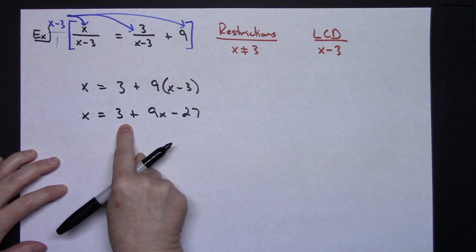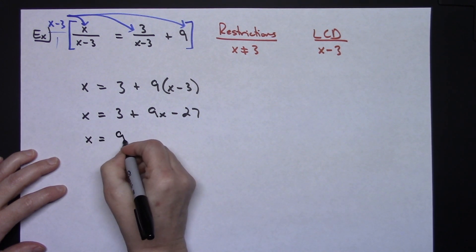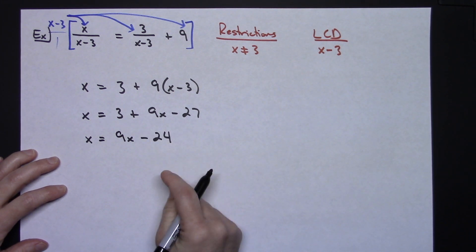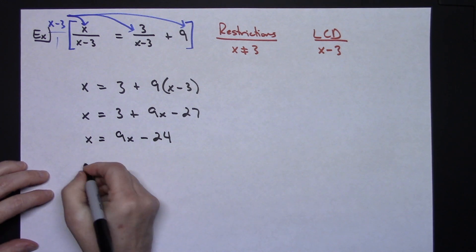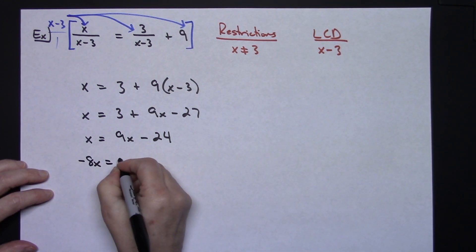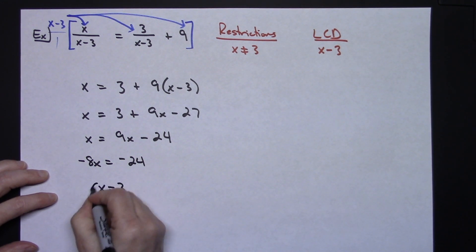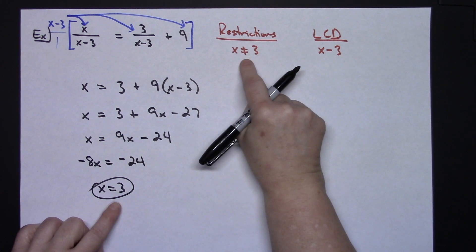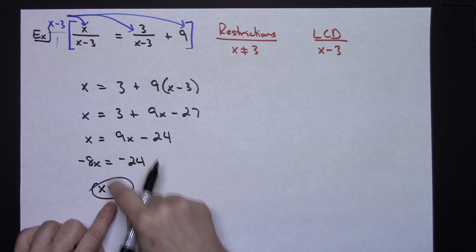Combining like terms: x equals 9x minus 24. Moving 9x to the left side gives negative 8x equals negative 24, which gives x equals 3. However, going back to my restrictions, x cannot equal 3 — that would put a 0 in the denominators.